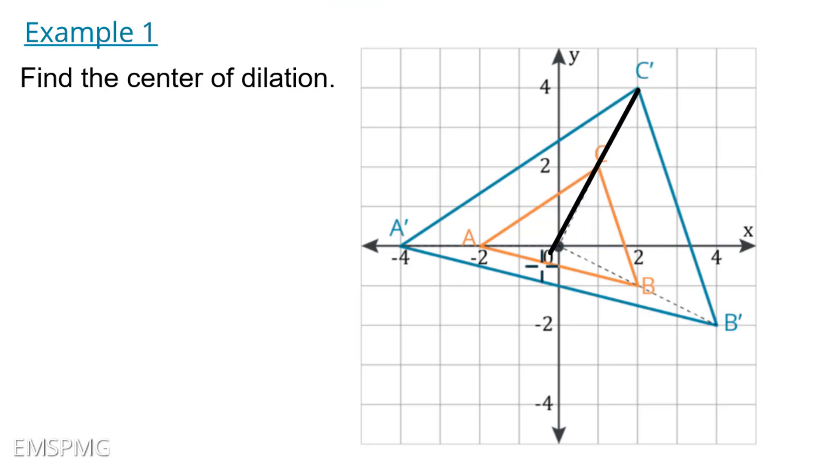So C prime and C, let's draw a line through there. And B prime and B, let's draw a line through there. And A prime and A, let's draw a line through there.